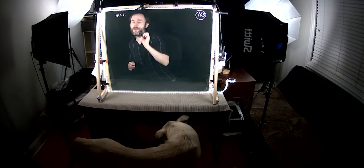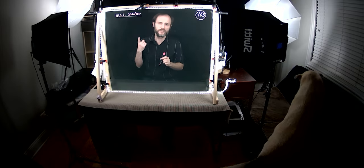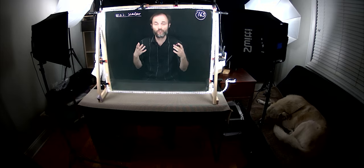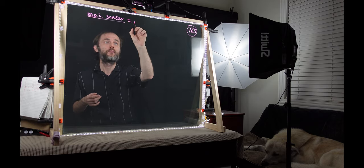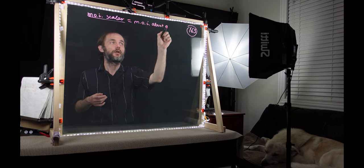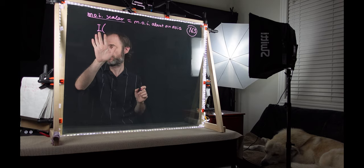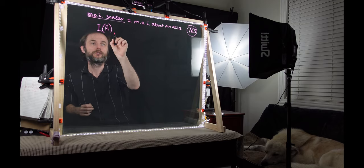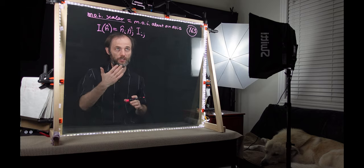What is moment of inertia scalar? While the tensor retains information about the distribution of mass in the body in all directions, the moment of inertia scalar retains information about the distribution of mass around a particular axis — it is the moment of inertia about an axis. Mathematically, the moment of inertia scalar along an axis given by unit vector n-hat is n_i times n_j times I_ij, the moment of inertia tensor.